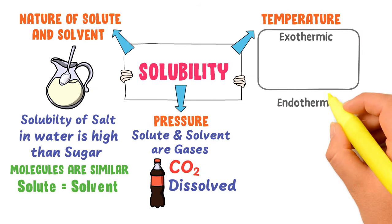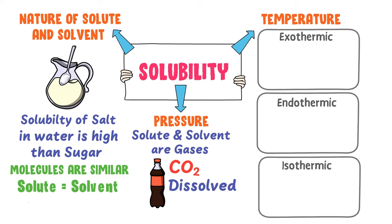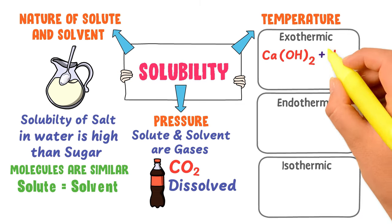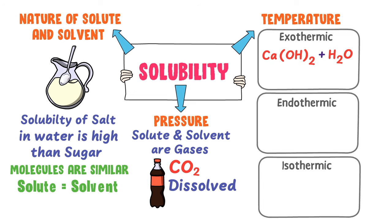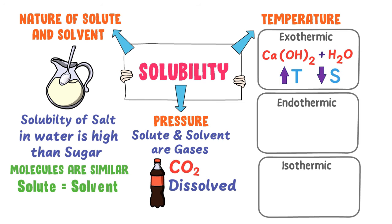For example, when you add calcium hydroxide to water, heat is released to the surroundings — this is known as an exothermic reaction. Here, if we increase the temperature, the solubility of calcium hydroxide in water decreases.